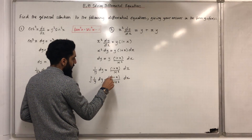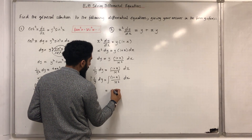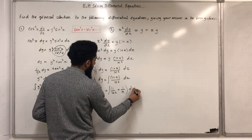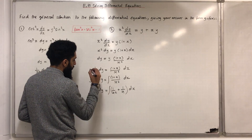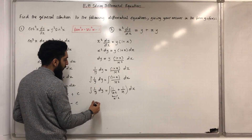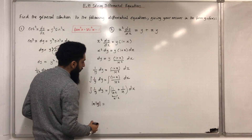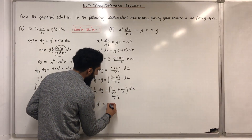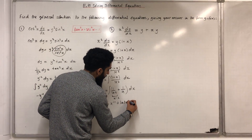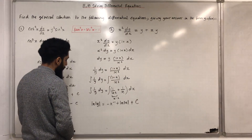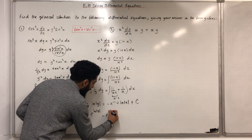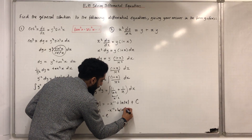I can divide 1 and x by x², giving me 1 over x² plus 1 over x. So the integral of 1 over y dy equals the integral of (x to the power minus 2 plus 1 over x) dx. The integral of 1 over y dy is ln|y|, equal to the integral of x to the power minus 2 — which is minus x to the power minus 1 — plus the integral of 1 over x, which is ln|x|, plus the constant of integration c. Now I apply e to the power of both sides: e to the power ln|y| equals e to the power (minus x to the power minus 1 plus ln|x| plus c).